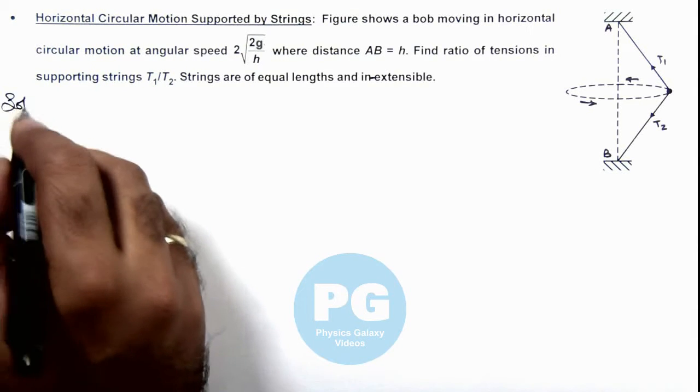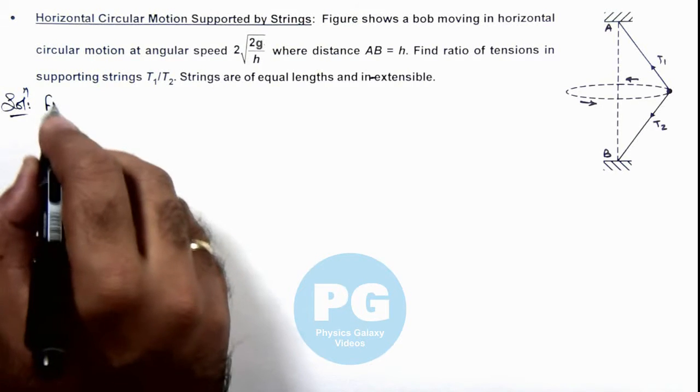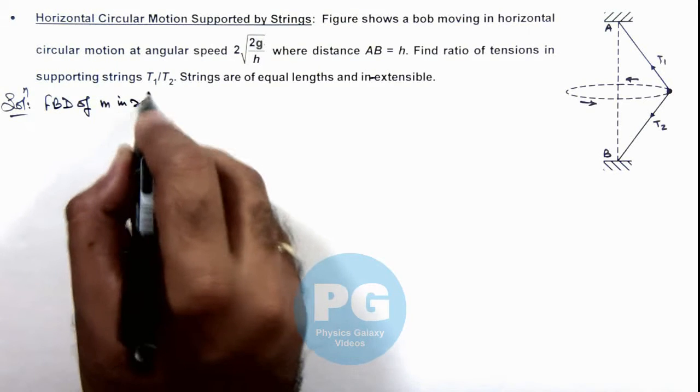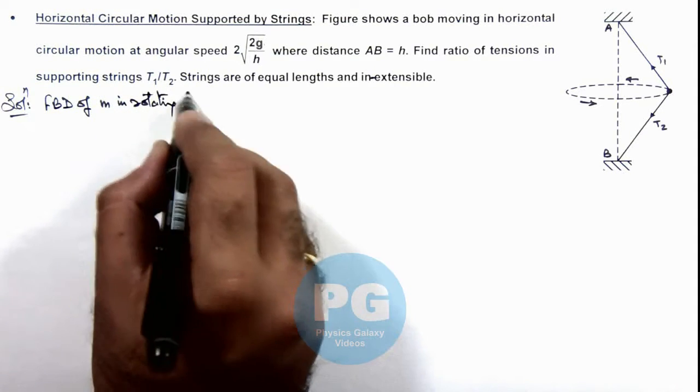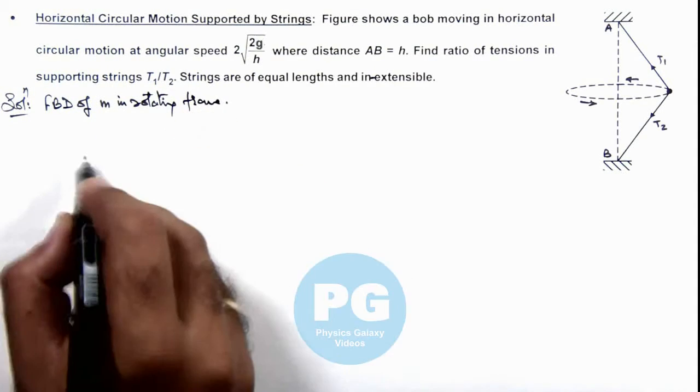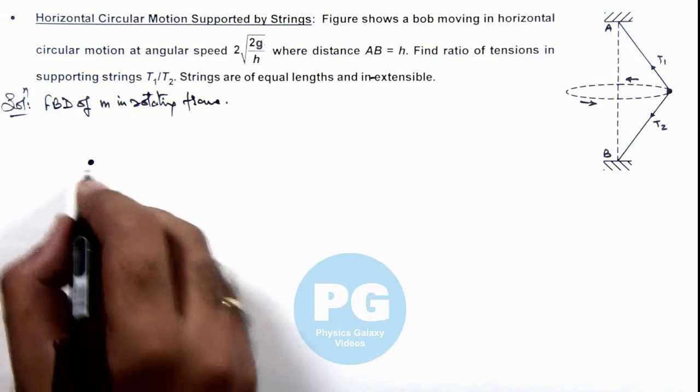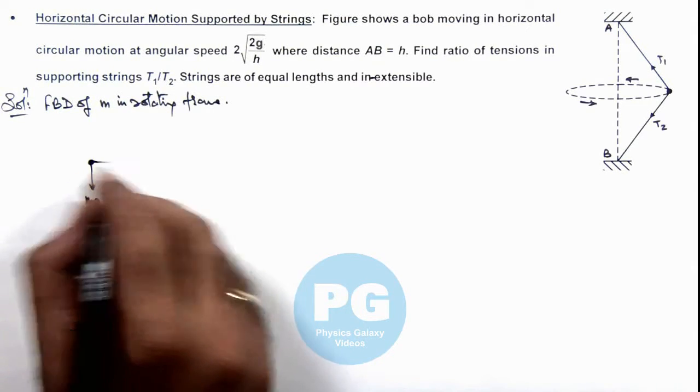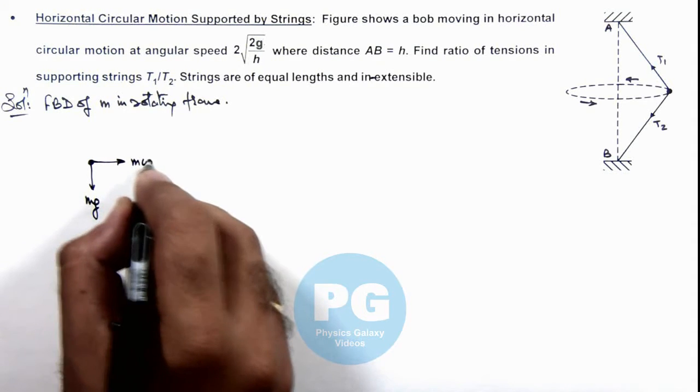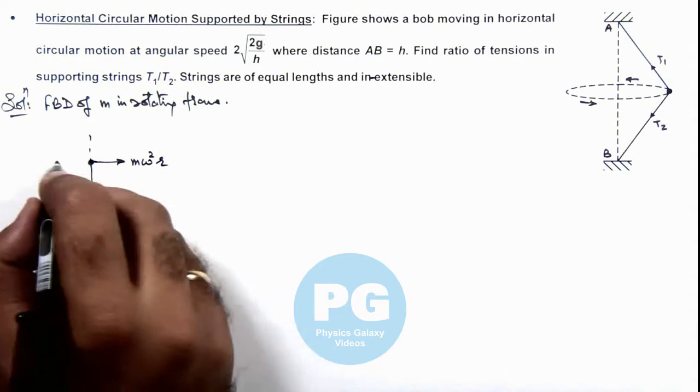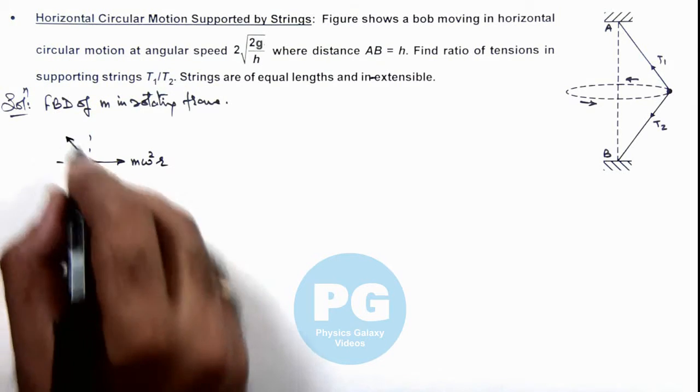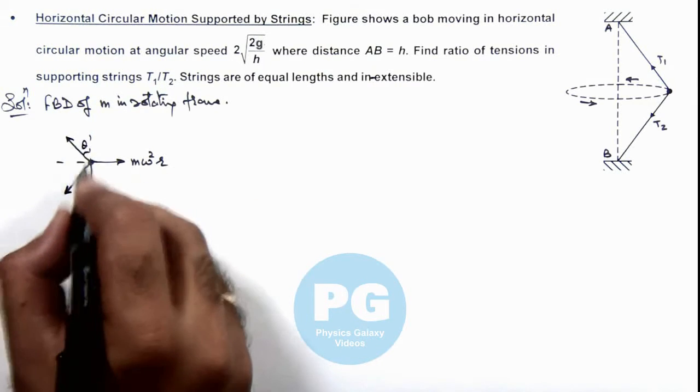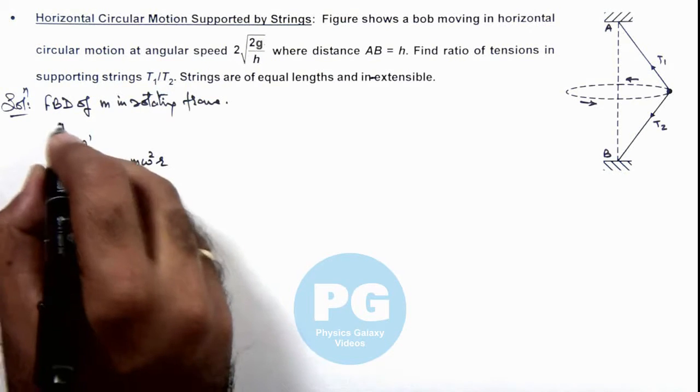Now in this situation, if we first draw the free body diagram of m in the rotating frame, then this can be seen here. This bob is experiencing mg in downward direction, centrifugal force mω²r outward, and two tensions are acting onto it, which are acting at an angle θ with the vertical, T₁ and T₂.